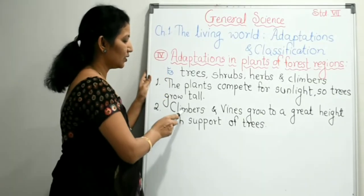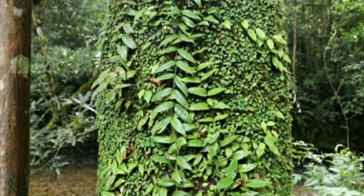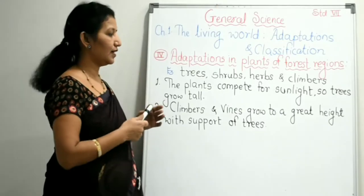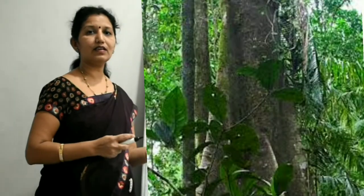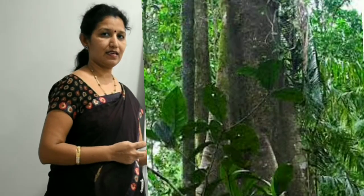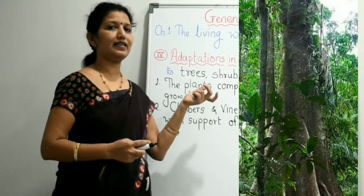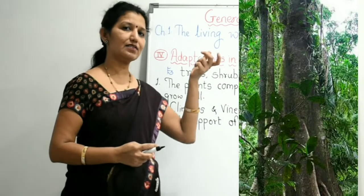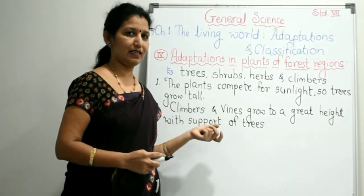Also, the climbers and vines grow to great height with the support of trees. They grow on the trees and reach great height so that they can also get sunlight easily.